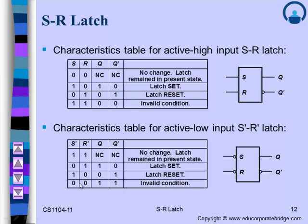When S-bar=1 and R-bar=0, we get output Q=0 and Q-bar=1, which is the reset state. When S-bar=0 and R-bar=1, we get output Q=1 and Q-bar=0, which is the set state. When S-bar=1 and R-bar=1, both are 1, we get no change — the output holds the previous value. Hence we also call it the no-change or hold state.